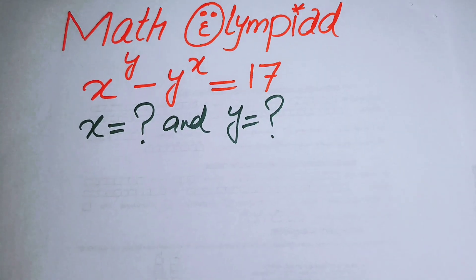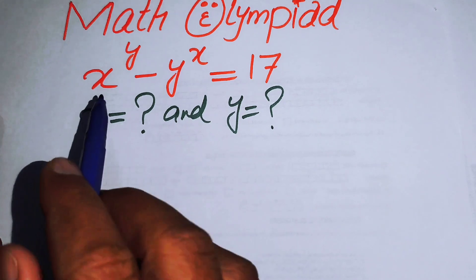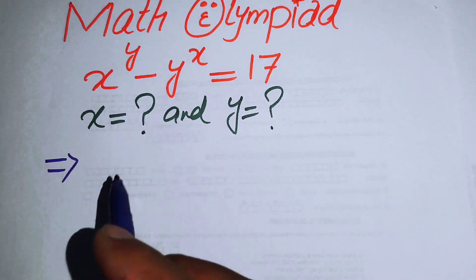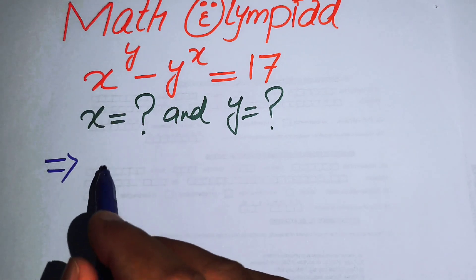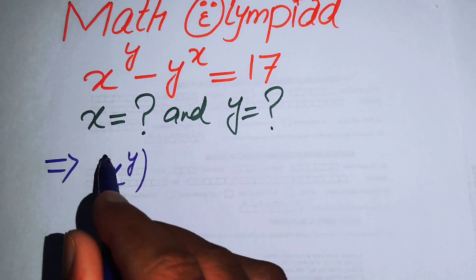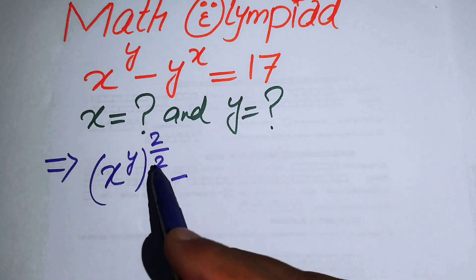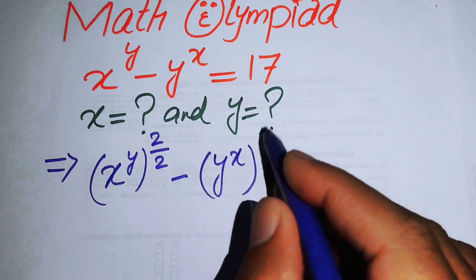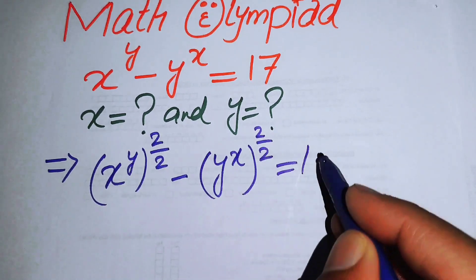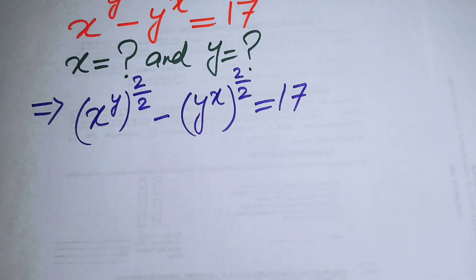The very first thing we do is rewrite this equation. We multiply and divide the exponent of x by 2, writing it as x to the power of y, whole power 2 over 2. Similarly, we multiply and divide the exponent of y to the power of x, writing it as y to the power of x, whole power 2 over 2, equals 17.